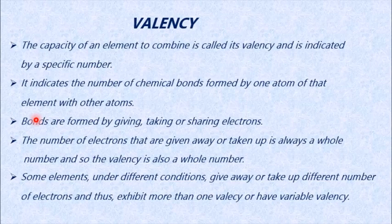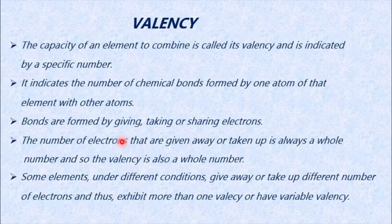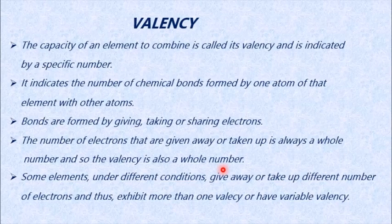The same happens with water: hydrogen has only one electron and an incomplete orbit, so two hydrogen atoms combine with oxygen. Together they form eight electrons and become complete. The number of electrons given away or taken up is always a whole number, so the valency is also always a whole number. Valency can never be 1.2, 2.3, or 4.4 — it will always be a whole number like 1, 2, 3, or 4.